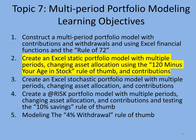Modeling Topic 7, Section 2: we're going to create an Excel static portfolio — by static I mean non-stochastic. We'll create a static portfolio model with multiple periods, changing asset allocations over your lifetime using the 120-minus-your-age stock allocation rule of thumb, with contributions.